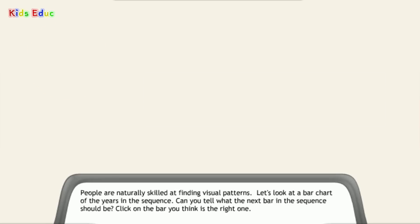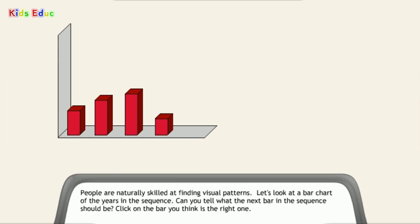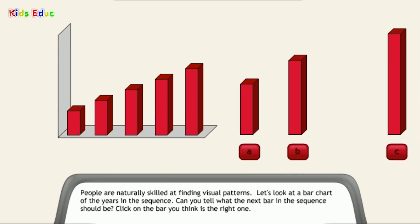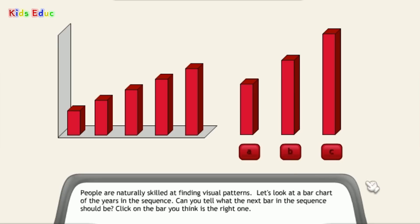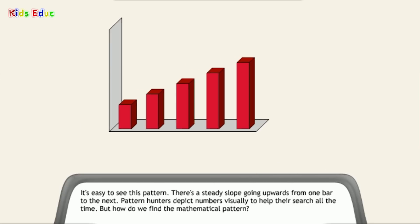People are naturally skilled at finding visual patterns. Let's look at a bar chart of the years in the sequence. Can you tell what the next bar in the sequence should be? It's easy to see this pattern. There's a steady slope going upwards from one bar to the next.